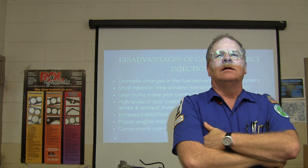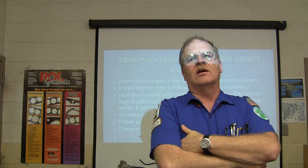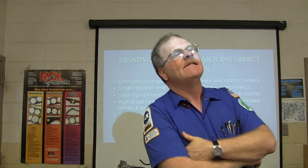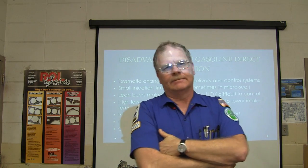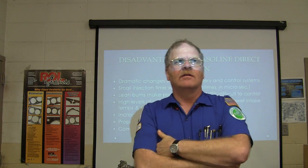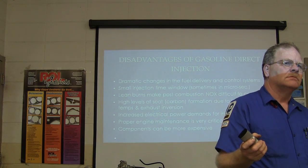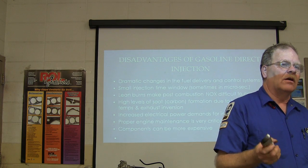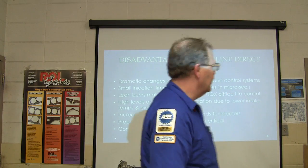There are increased carbon formation issues due to lower intake temperatures and increased electrical power demands for the injectors. These injectors typically fire on about 50 volts. This is similar to diesel injectors — older 7.3 Power Stroke fired on 115 volts, Duramax used around 93 volts, and the 6.0L used around 47 volts. Higher voltage allows faster actuation: lower resistance plus higher voltage means very rapid injector operation.